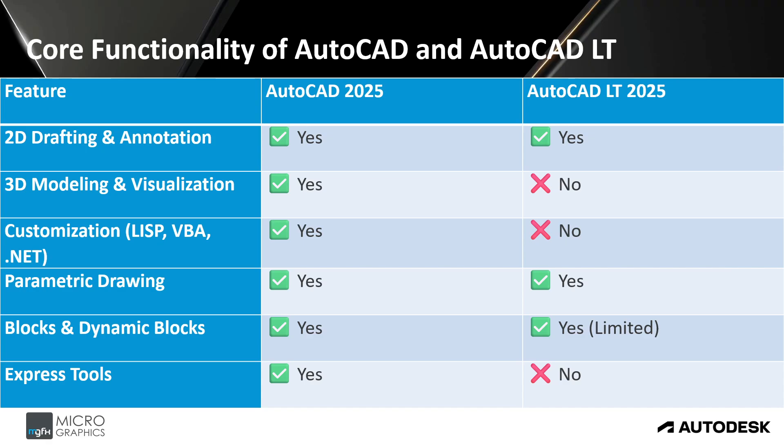Looking at core functionality: both AutoCAD and AutoCAD LT support 2D drafting and annotation as well as parametric drawing and blocks and dynamic blocks. However, AutoCAD LT is limited to using dynamic blocks and cannot create parametric dynamic blocks or smart blocks. AutoCAD LT also lacks 3D modeling, visualization, and rendering capabilities. For customization — LISP files, VBA, or .NET — AutoCAD full can run LISP files whereas AutoCAD LT cannot. Express tools are only available in the full version.